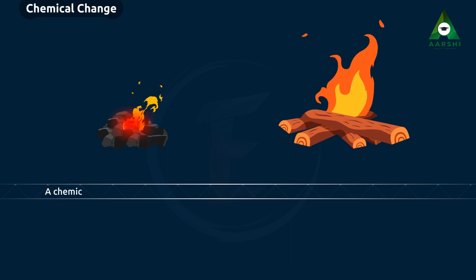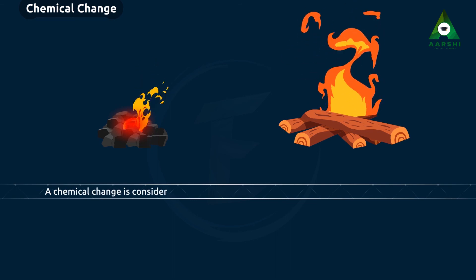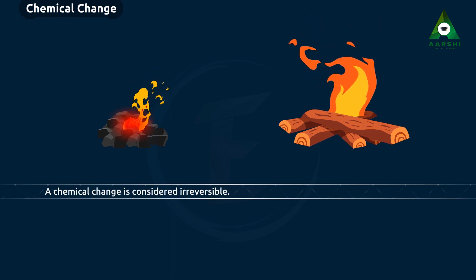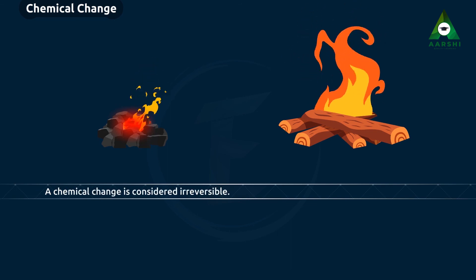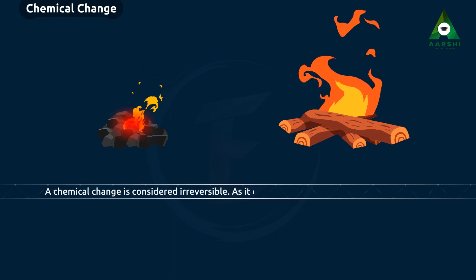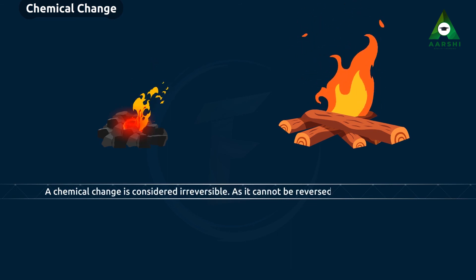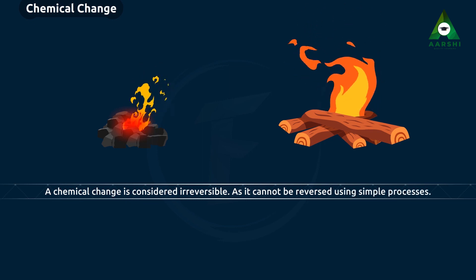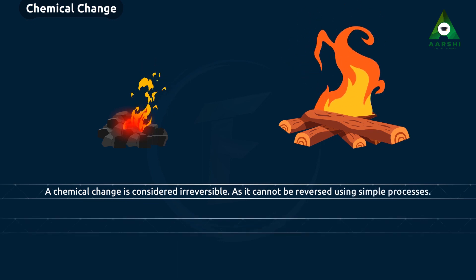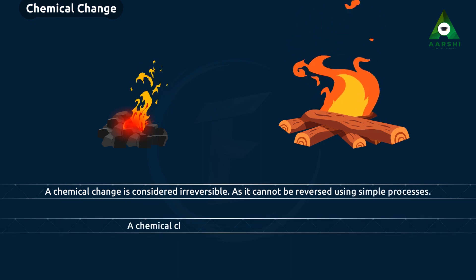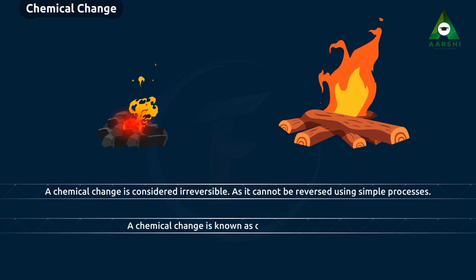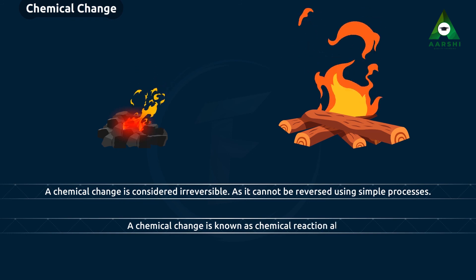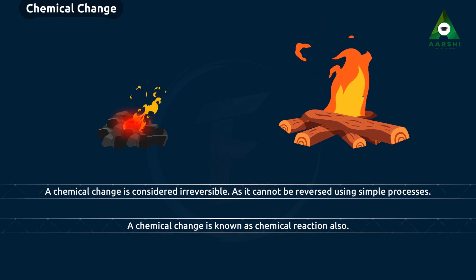A chemical change is considered irreversible, as it cannot be reversed during chemical processes. A chemical change is also known as a chemical reaction.